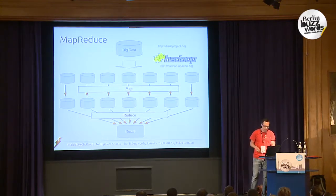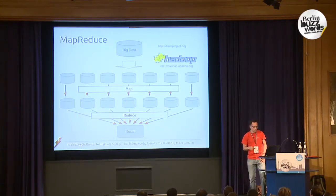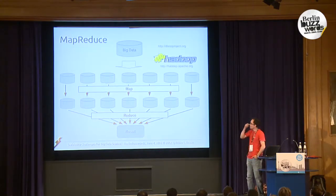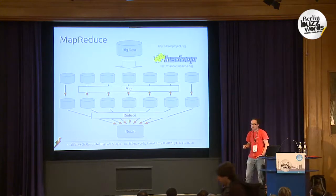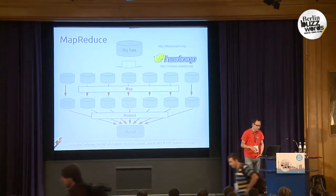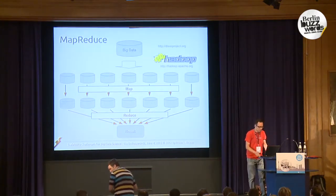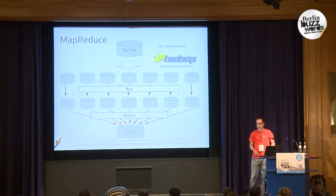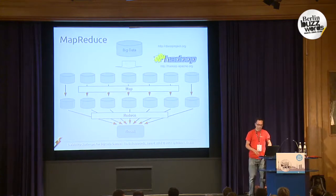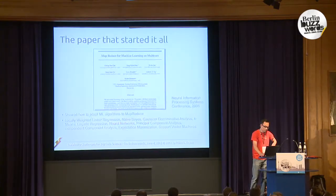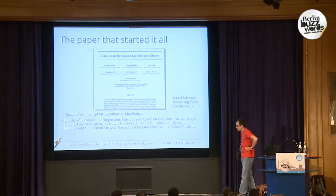Hadoop is the most popular tool for that. There's also another thing called the Disco Project, developed by Nokia, which is written in Python. So if you don't like writing MapReduce jobs in Java, you should probably check it out because it's a bit easier to use.